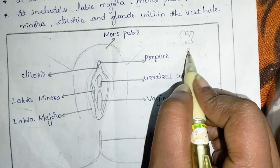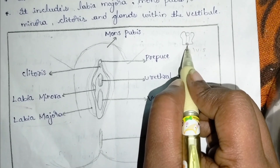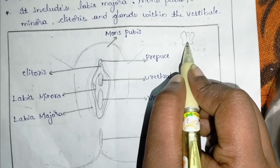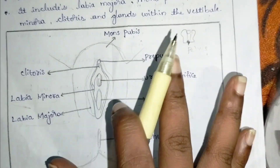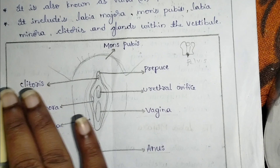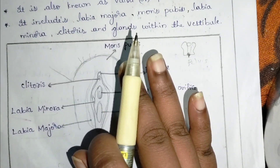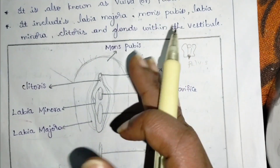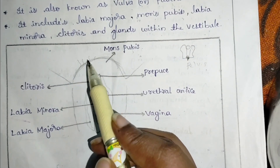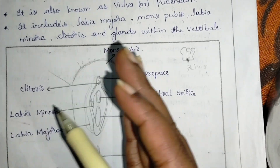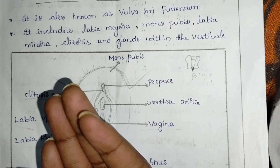Also included is the anus. These are the external genitalia parts. First, mons pubis — this is actually located above the symphysis pubis. Here the symphysis pubis is present, and above it mons pubis is present. Before puberty it is very flat, with no hair growth and no fat accumulated, but after puberty fat starts accumulating and hair starts growing, due to the release of estrogen and progesterone.